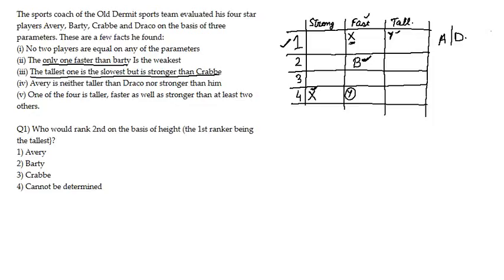Now the fourth condition: A is neither taller than D nor stronger than D. So if Y were A, A would have to be taller than D — but that contradicts condition 4. Therefore Y must be D. Draco is the tallest and also the slowest, placed at rank 4 in the speed column.